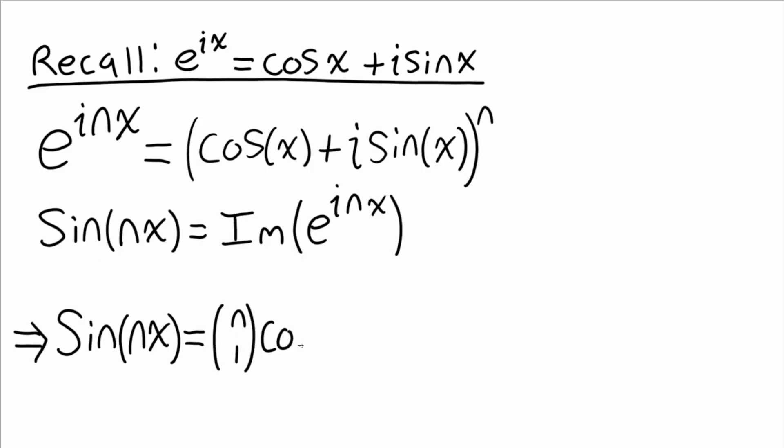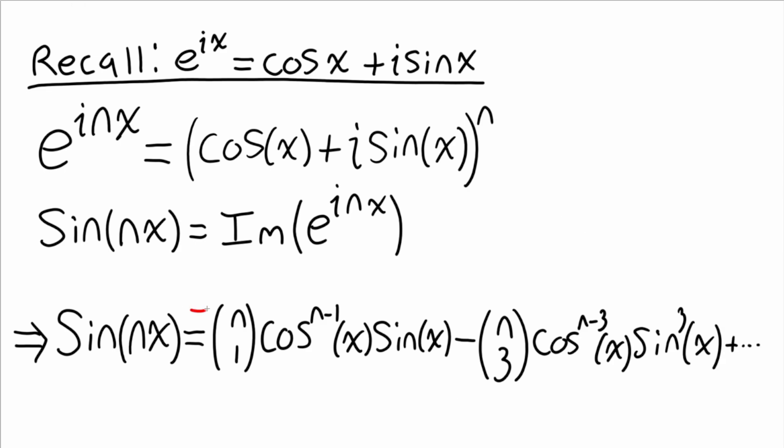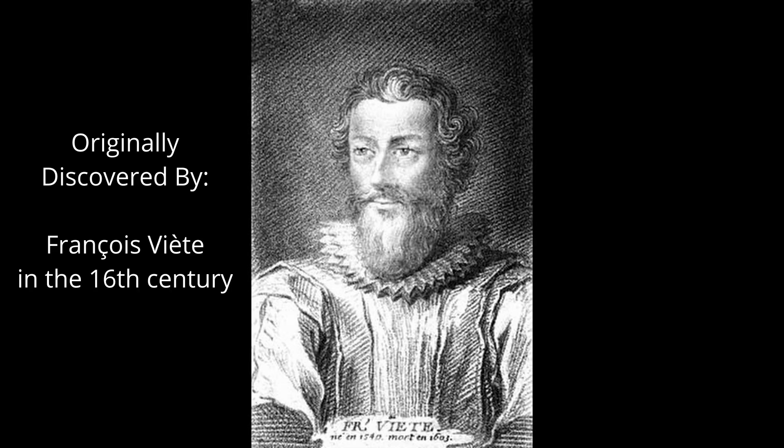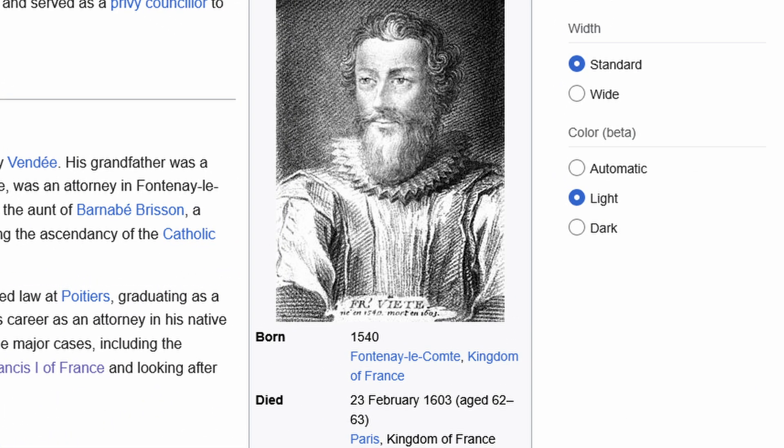A bit more concretely, sine of nx is the same thing as the terms of the expansion where sine has an odd power. Notice the alternating signs caused by the unshown powers of i involved. Just a bit more interesting history that I found while researching this. That sine result I showed you was actually discovered by Francois Viette in the 16th century, before de Moivre was even born. In fact, de Moivre was born 64 years after Viette died. I'm not sure why, but the fact that they never met makes me feel a bit melancholy.